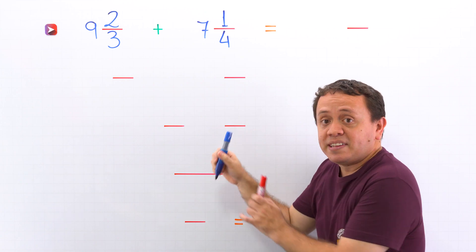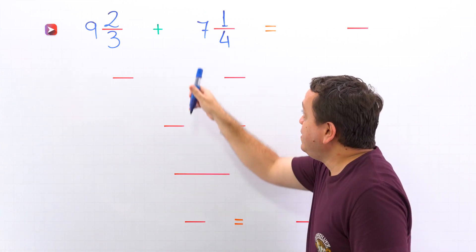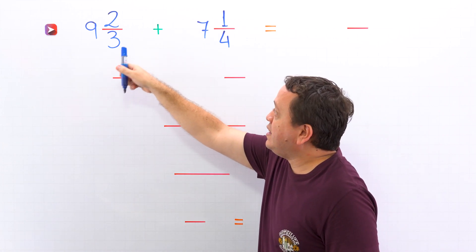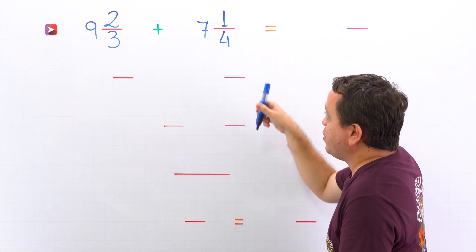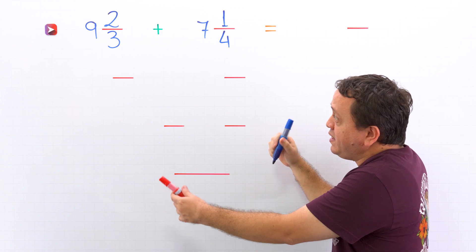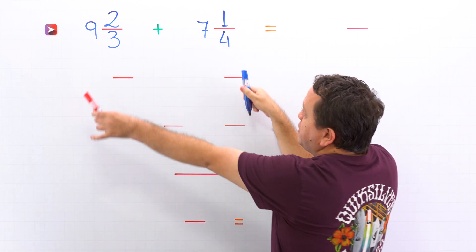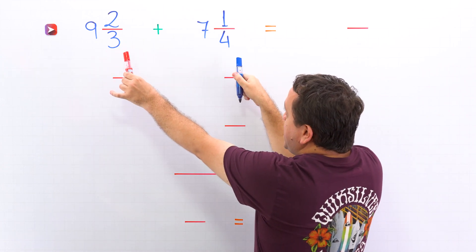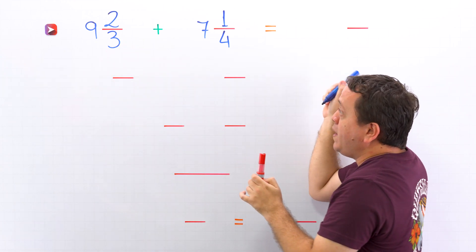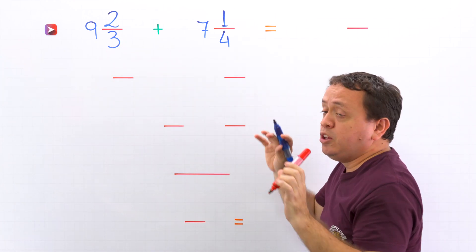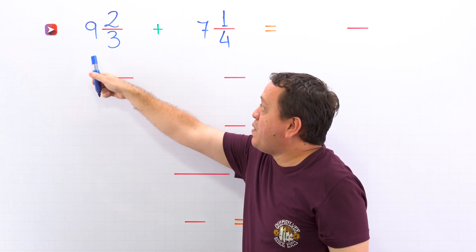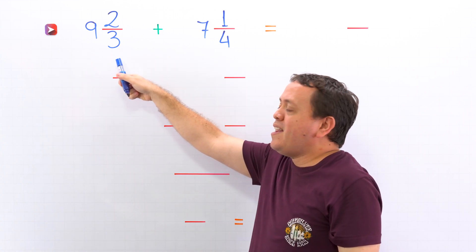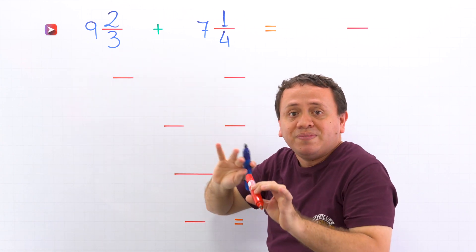In the first example, we need to find the sum of 9 and 2 thirds and 7 and 1 fourth. As you can see, these two mixed numbers have different denominators. To find the sum, we need to remember that a mixed number is the sum of a whole number and a proper fraction.